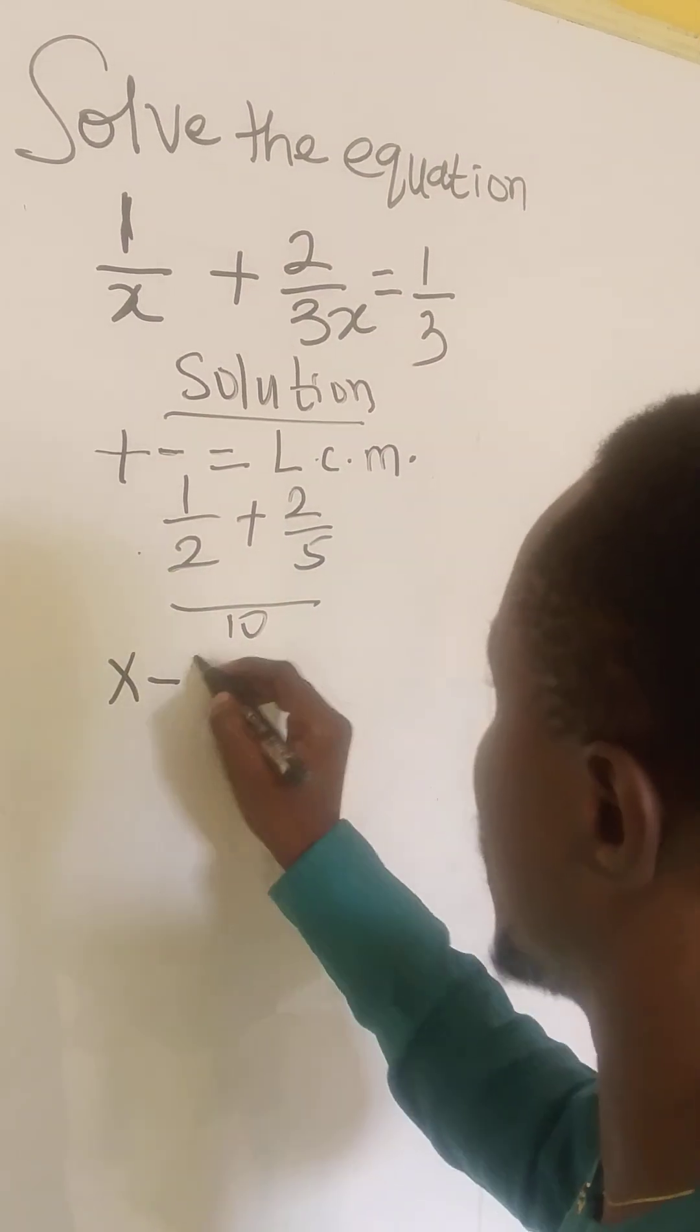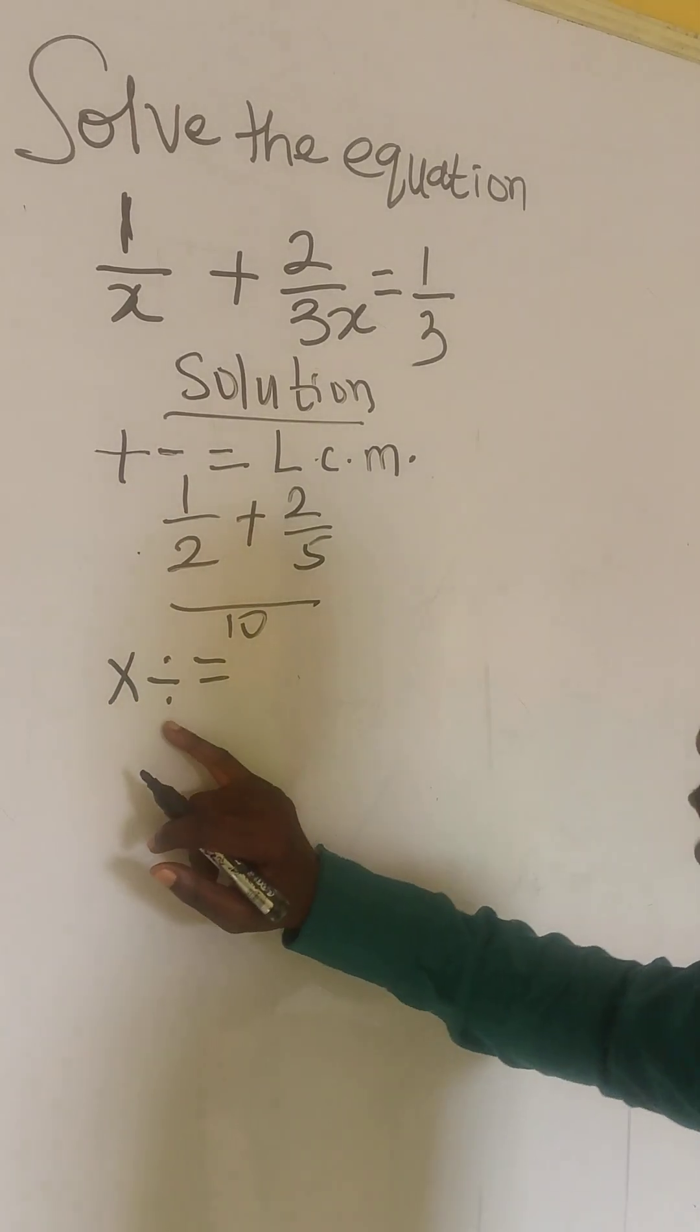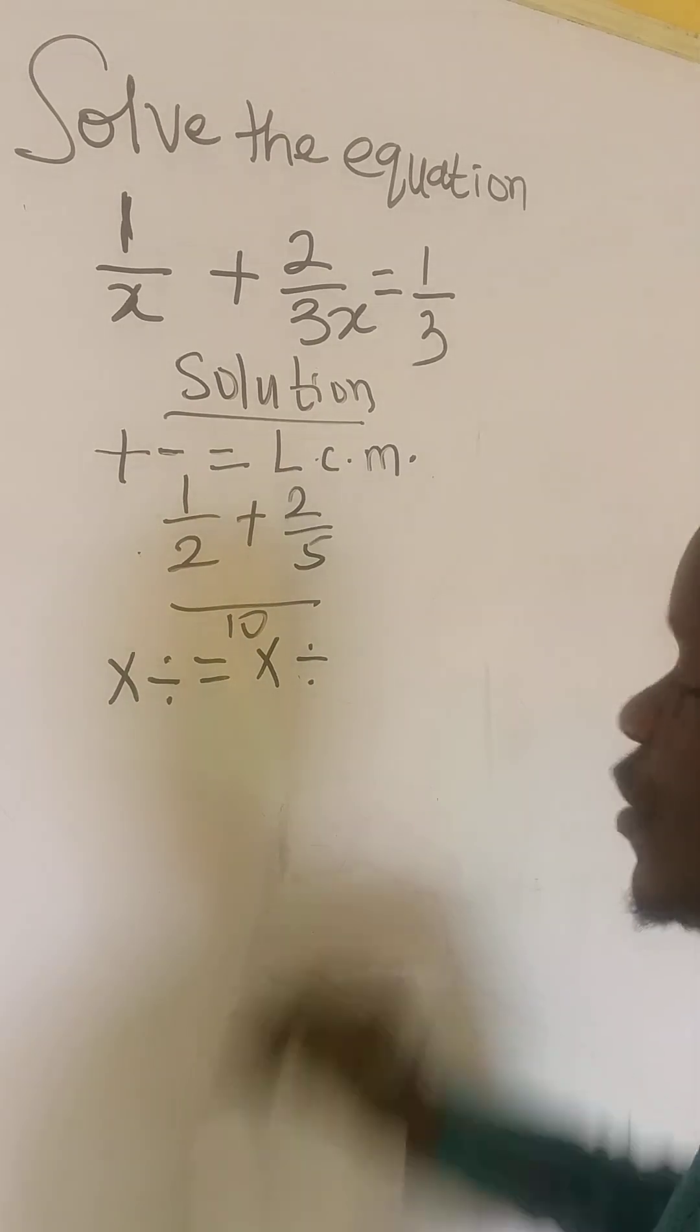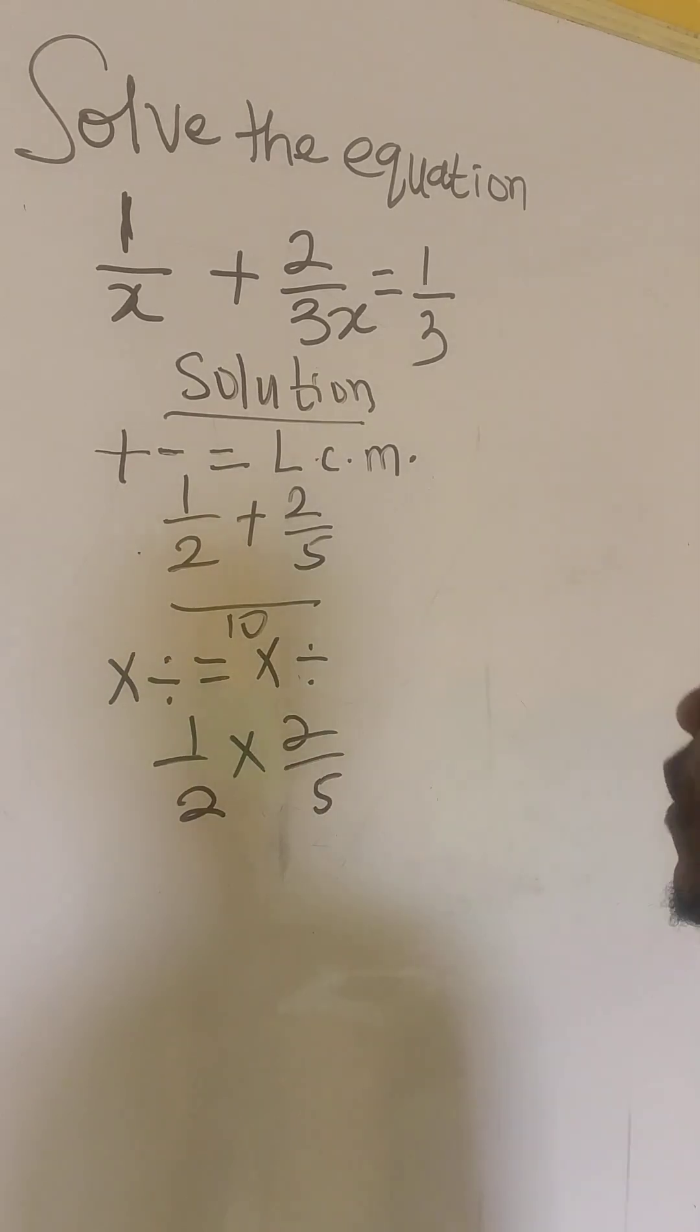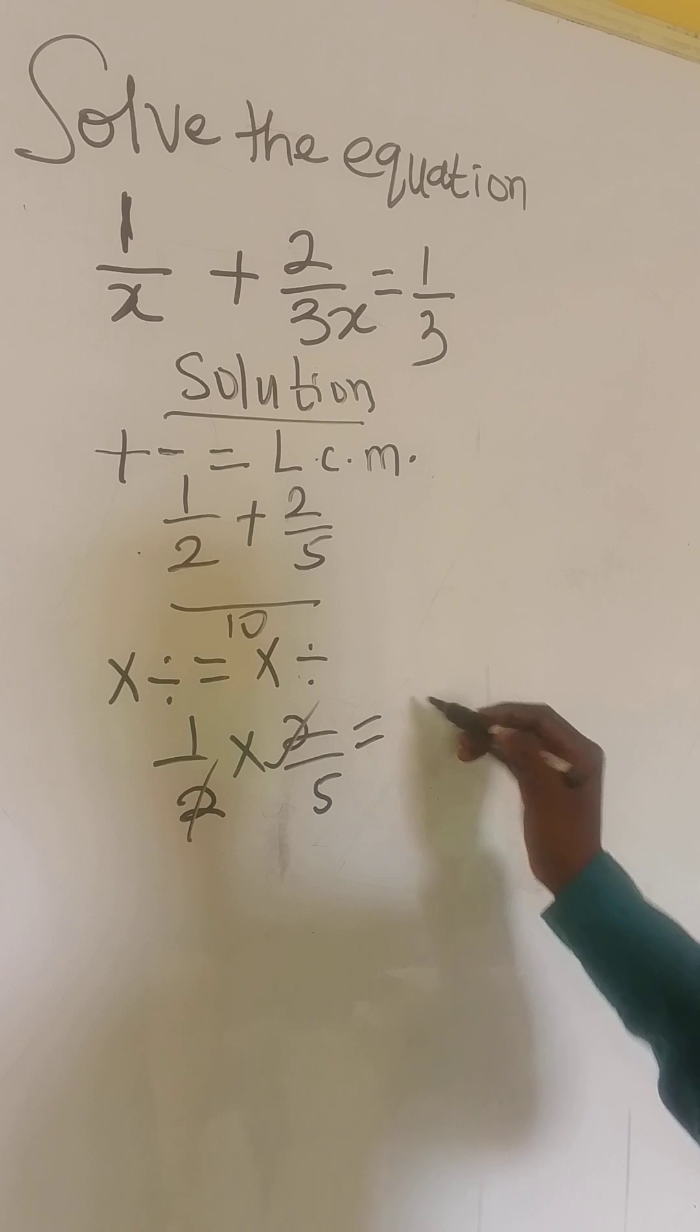And when two or more fractions are separated by multiplication sign or division sign, what you do is to multiply and divide. For example, you have 1 over 2 times 2 over 5. What we do here is to divide and multiply.